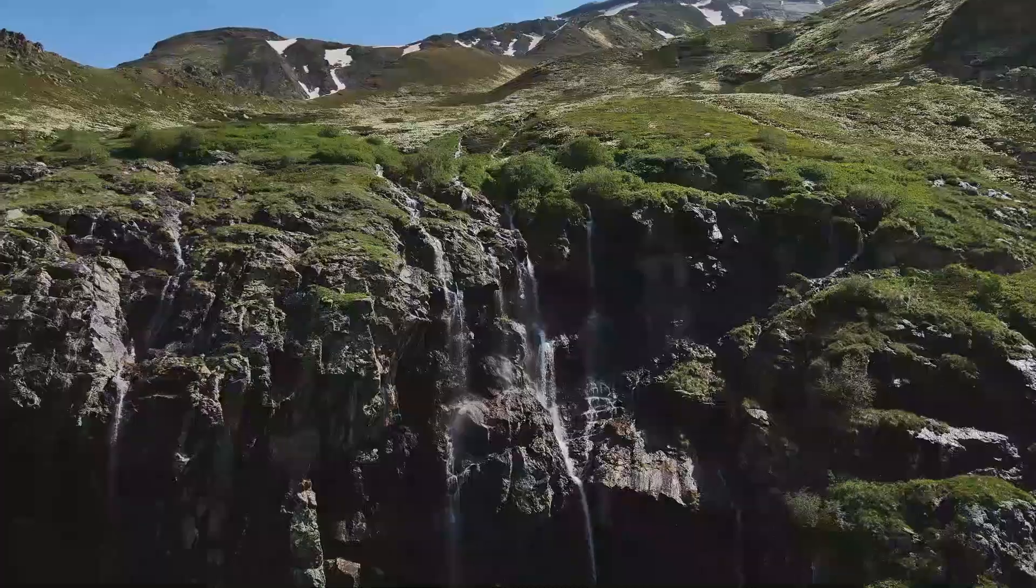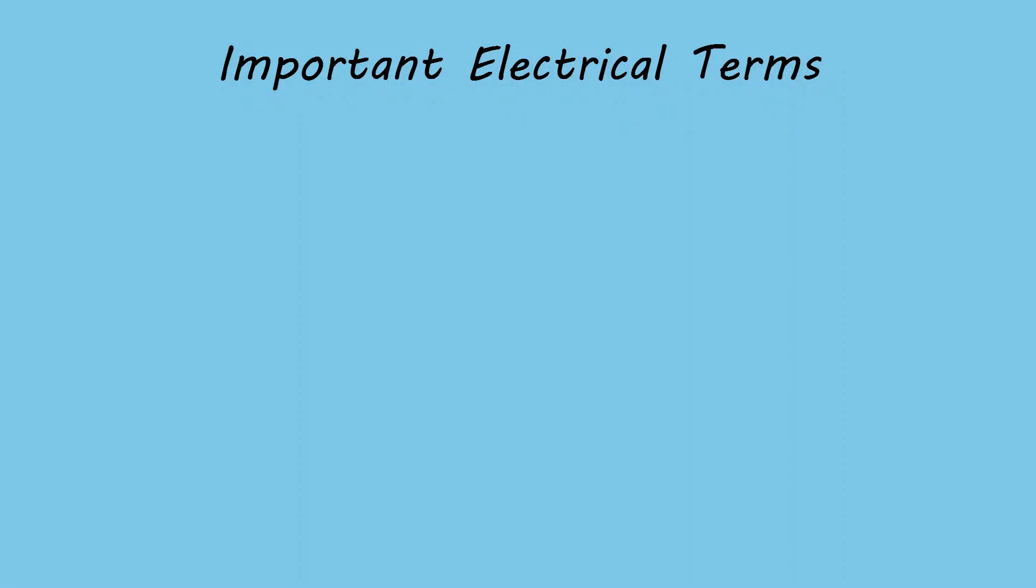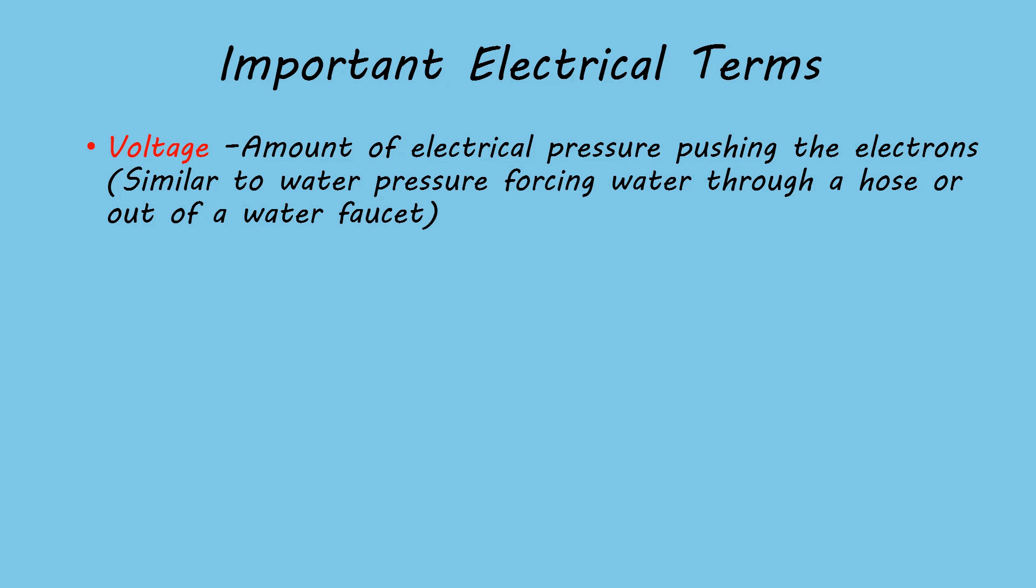Now let's talk about three key electrical terms you need to know. First is voltage. This is the electrical pressure pushing electrons through a wire. It's similar to how pressure pushes water through a water hose or a pipe.